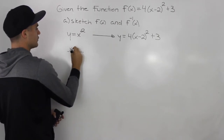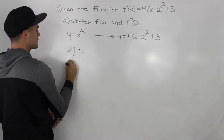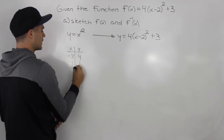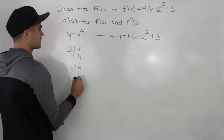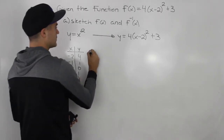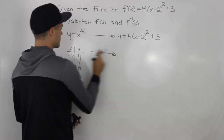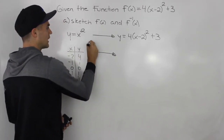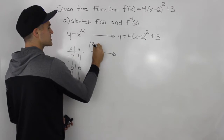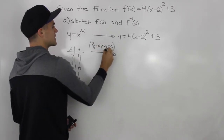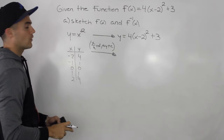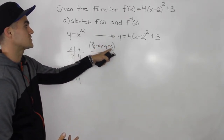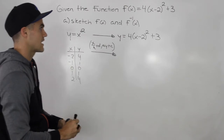Let's start by making a table of values for x². We have x values: negative two, negative one, zero, one, and two, giving y values: four, one, zero, one, and four. Now we have to take these points and transform them with the formula x/k + d for the x values and ay + c for the y values. We need to figure out the k, d, a, and c values.